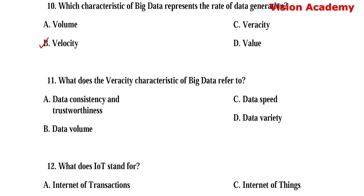Question number 11. What does the veracity characteristic of big data refer to? Option A: Data consistency and trustworthiness. Option B: Data volume. Option C: Data speed. Option D: Data variety. Here, option A, data consistency and trustworthiness, is the right answer.